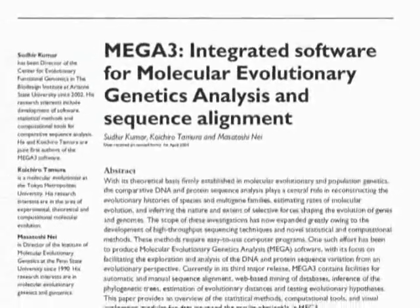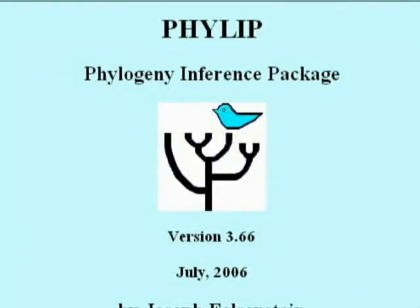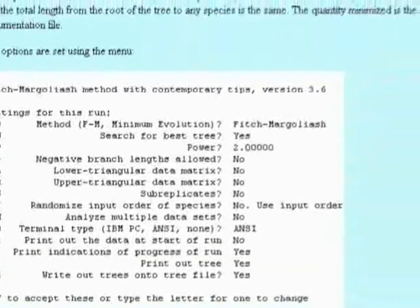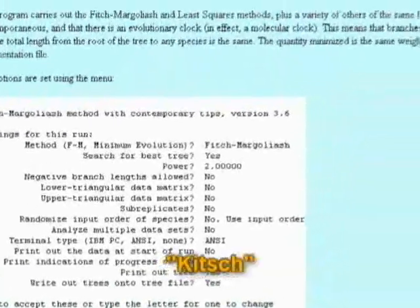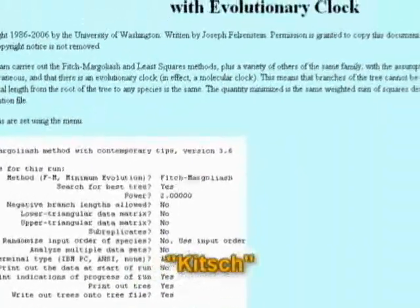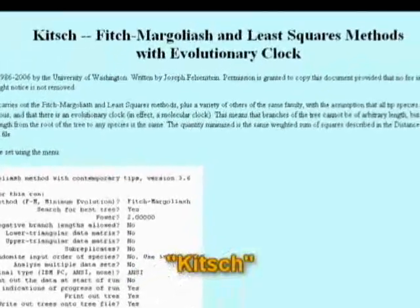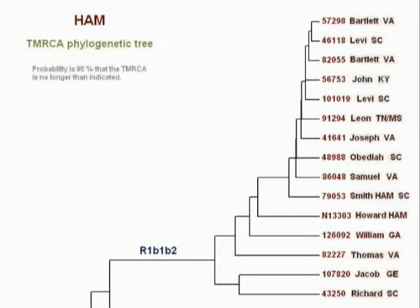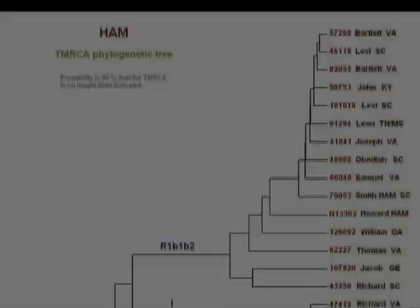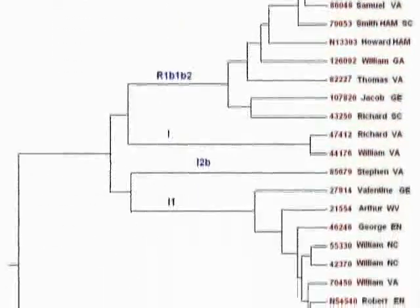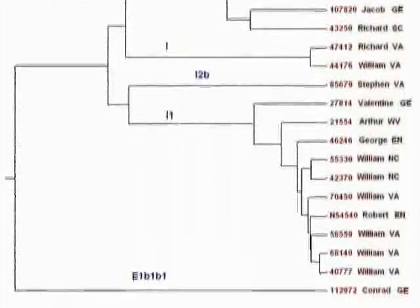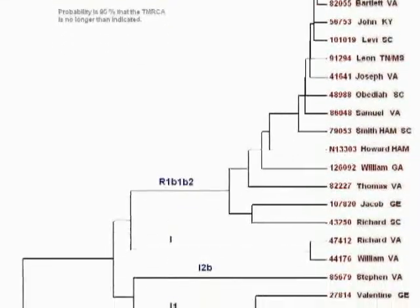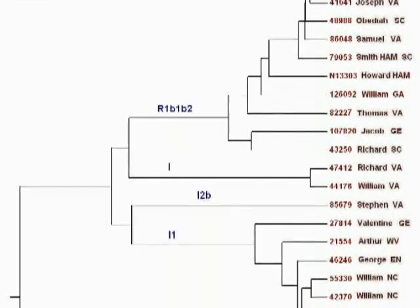The software used to create this chart can be found in the Philips package. It's a program called KISH. KISH automatically sorts the data into groups that are similar to each other. The end result is a graph that looks something like this. When viewing the graph, it is helpful to remember that the Philips program has tried to group the data so the similar kits are next to each other.